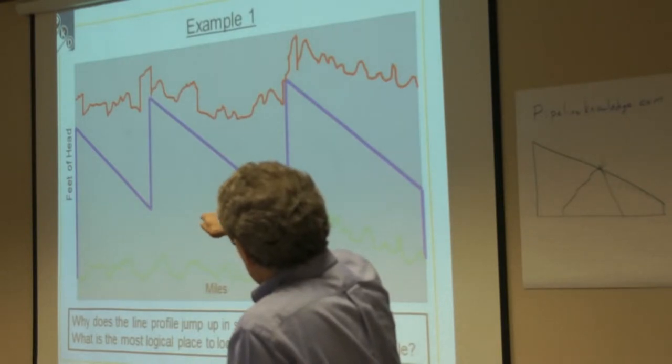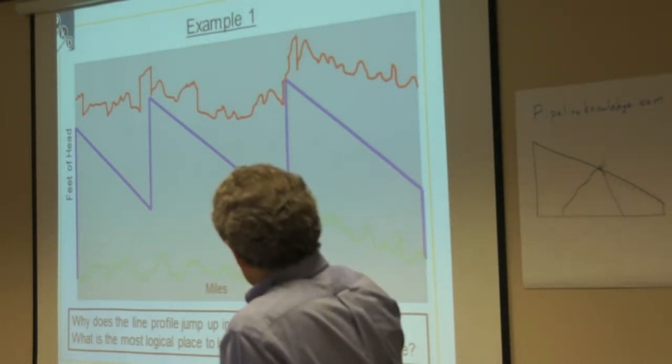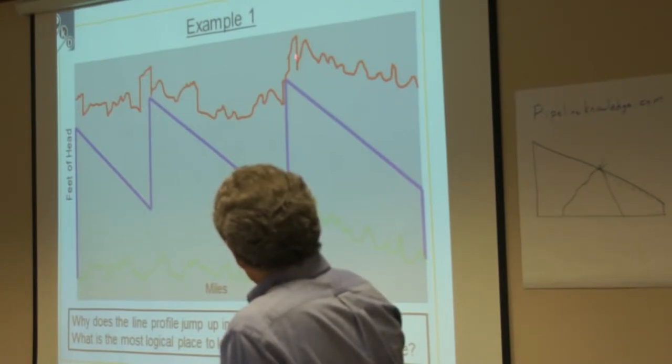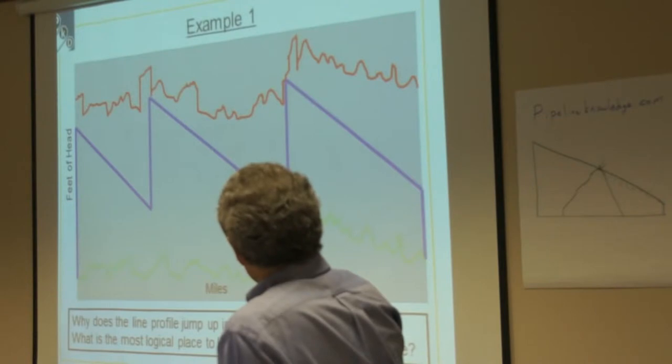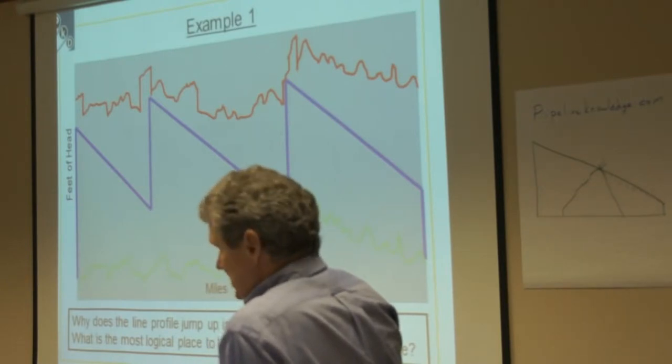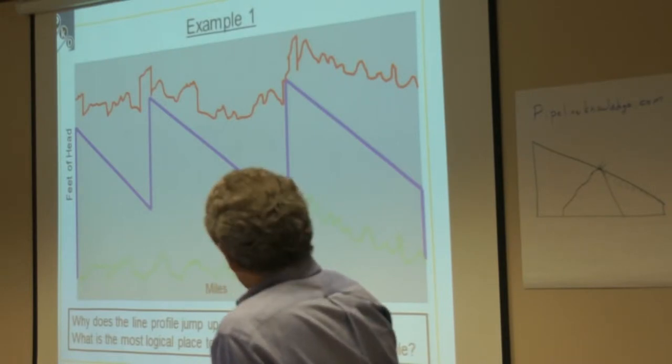Here's a little example. We're going along, we're discharging, we're coming out, we're discharging again. One of the questions is, why does the line profile - which should be the maximum allowable operating profile - jump up in a couple places? There's probably thicker wall piping. What's the most logical place to look for optimization in this example? If you were going to use less energy here, where would you look? Spend a few minutes and kind of look at it, give you about a minute or two, and then we can talk about what your thoughts are.